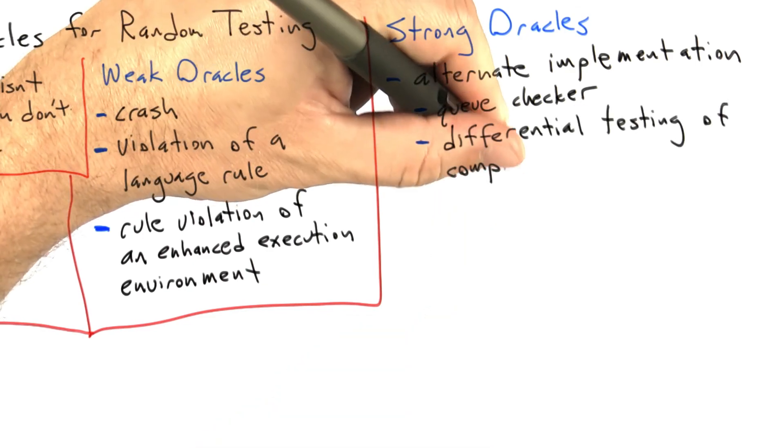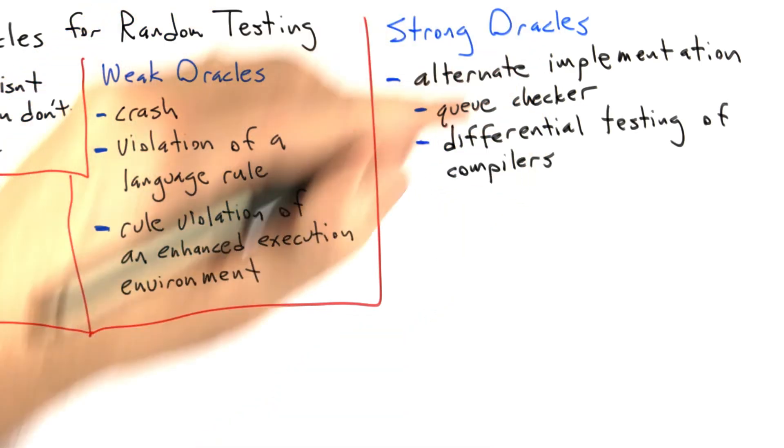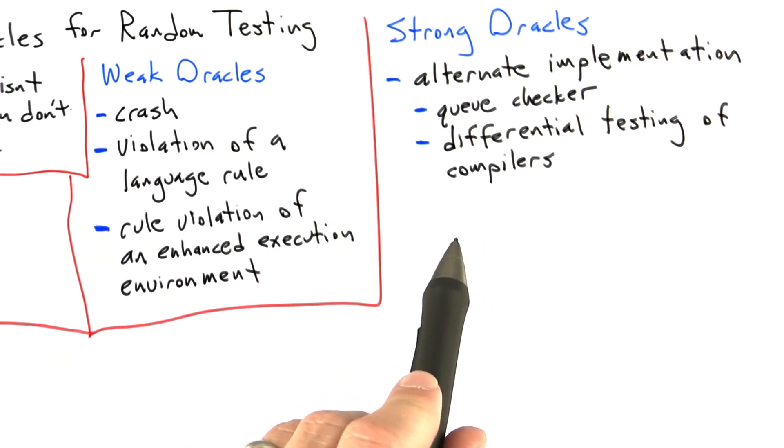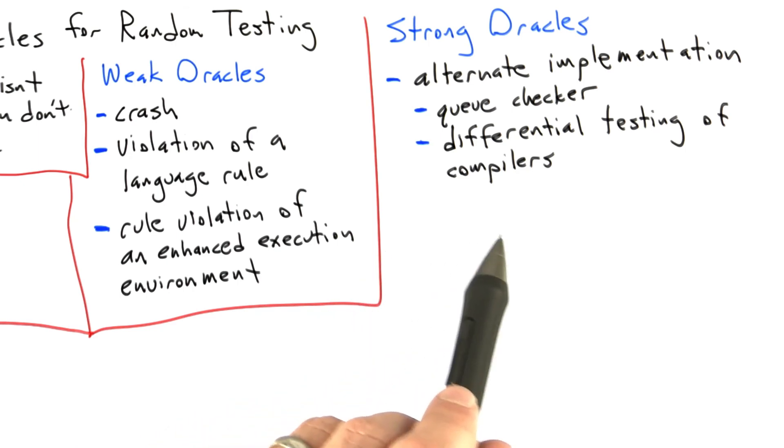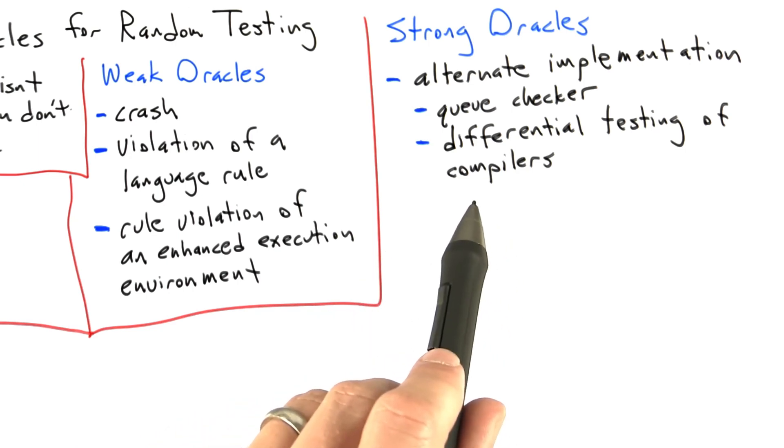Another example we use in my compiler testing work is what's called differential testing of compilers. What that basically means is if we have multiple implementations of the same compiler specification, for example multiple C compilers, we expect them to behave the same given equivalent inputs.